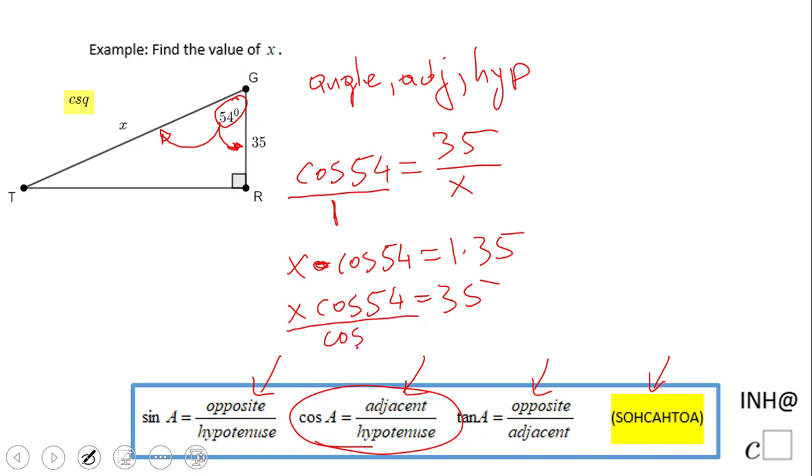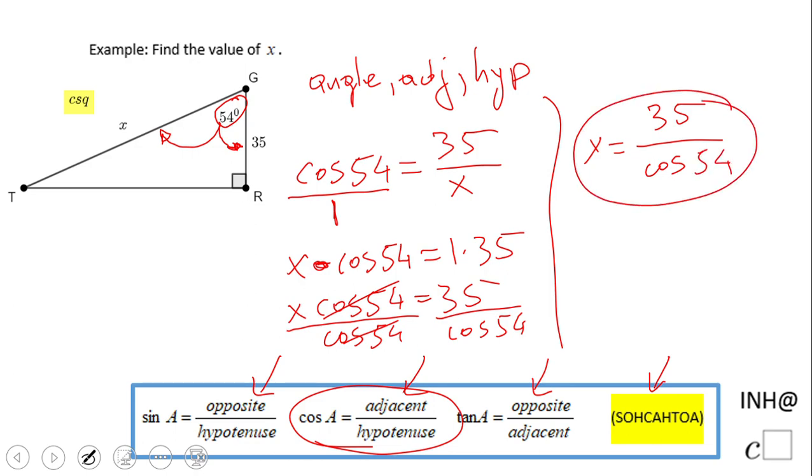When I solve for x, we're going to divide by cosine of 54. So we're going to have x equals 35 over cosine of 54. If you need an approximation, you need a calculator. Be sure your calculator is in degree mode if you have that choice.